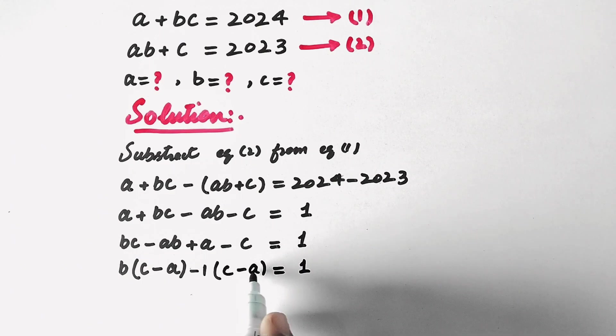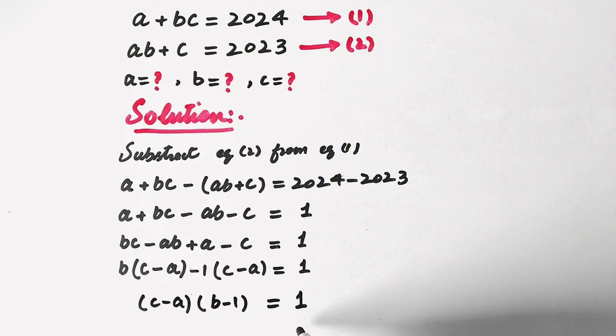Now here this term and this term is the same, so it will be common. And then here left is (C - A)(B - 1) equals 1. Now here we can see that we have two factors that are equal to 1.